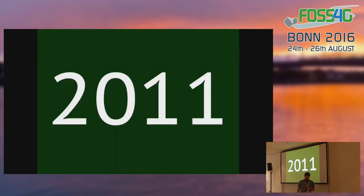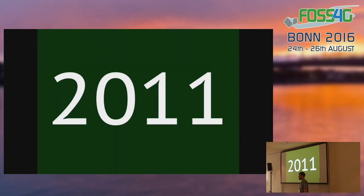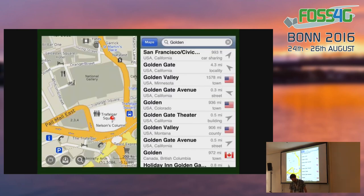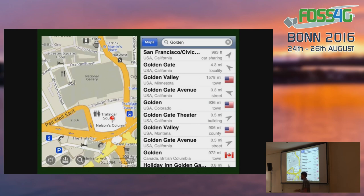In 2011, three developers from Belarus got tired of mapping applications always requiring internet to show maps. So they took OpenStreetMap data, downloaded it, processed it, and made offline maps for iOS and Android. It was pretty good — fast, with searching and bookmarks. They looked at it and decided that with this app, they would rival Google Maps and Apple Maps.